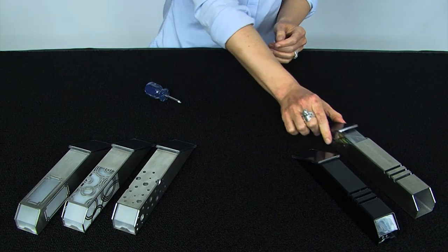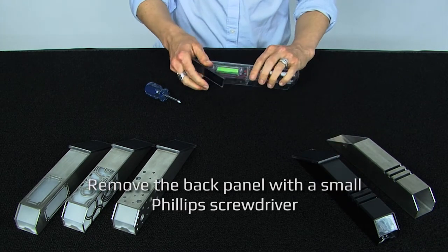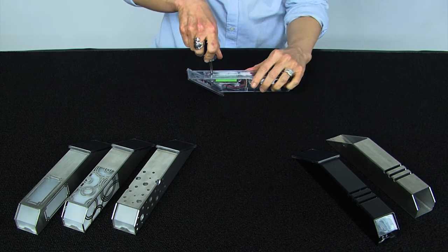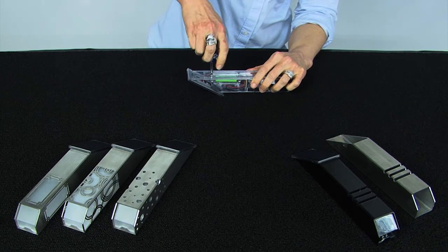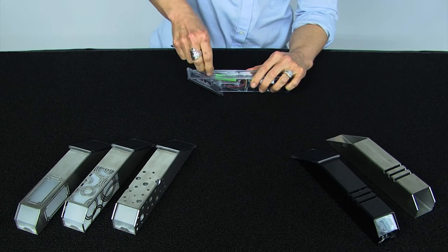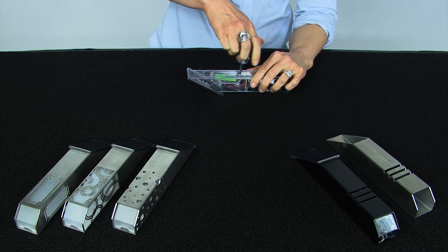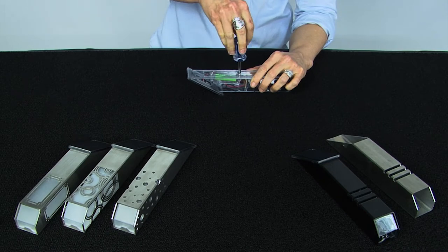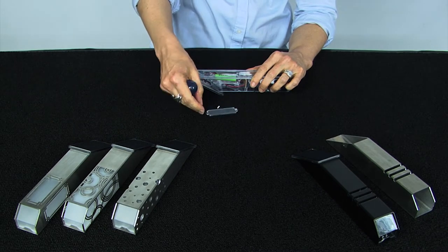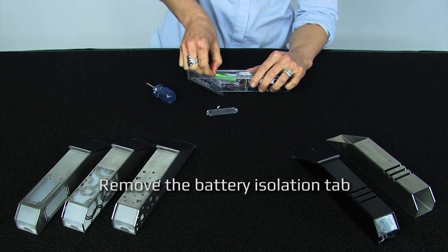To activate the starlight, first remove the battery panel using a small Phillips screwdriver. Remove the battery isolation tab.